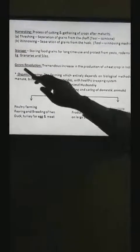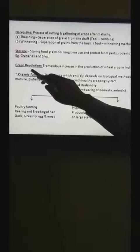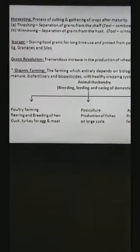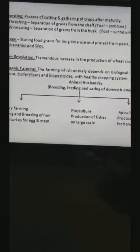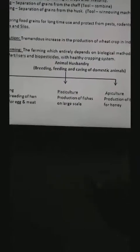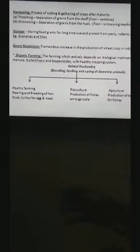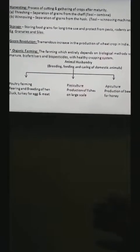The another topic of this important chapter is green revolution. It has been tremendous increase in the production of wheat crop in India during last 30 years. This is called green revolution. It has made our country self-sufficient in food grains production and has improved the economic conditions of farmers.